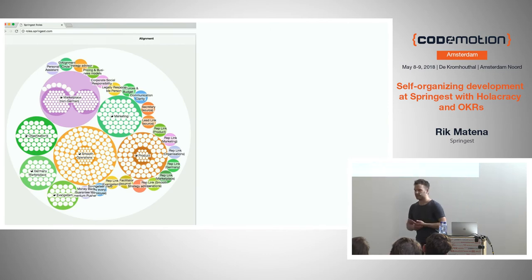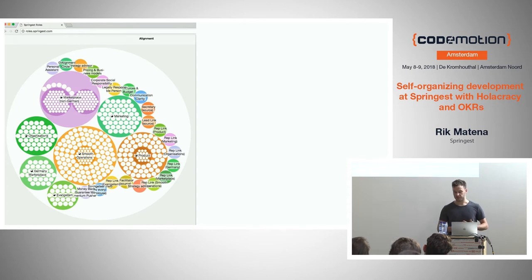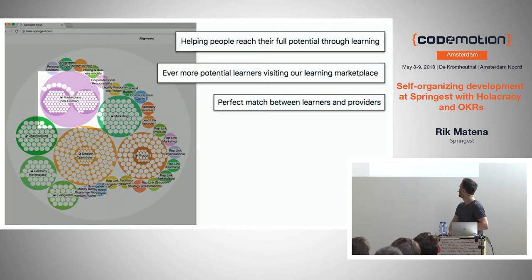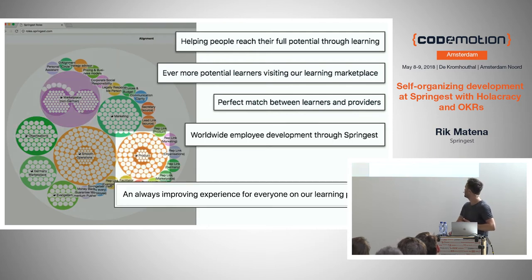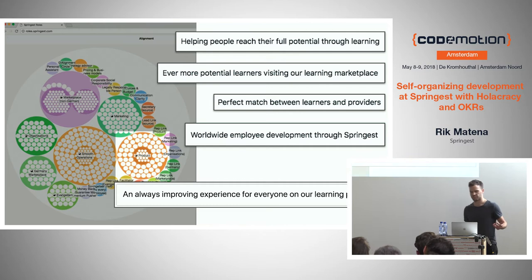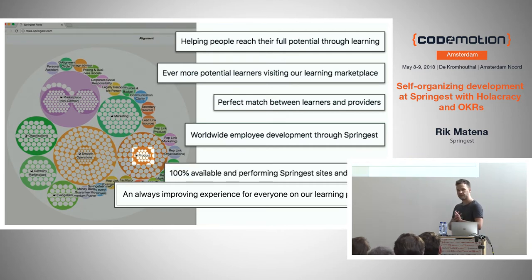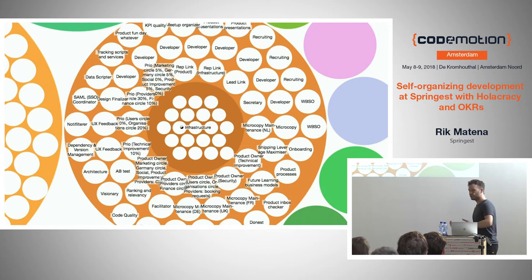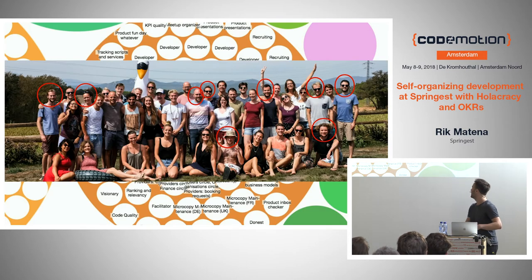One clear advantage Holacracy gives you is the sense of purpose that can trickle down from the company as a whole to its various circles and sub-circles. The alignment circle has the purpose of helping people reach their full potential through learning. You can see some other circles and their purposes here. We reach the product circle with the purpose: continuously improving experience for everyone on our learning platform. The product circle also has a sub-circle called infrastructure, with the purpose: 100% available and performing Springist sites and services. Zooming into the product circle, you see a whole bunch of roles.